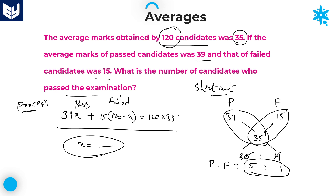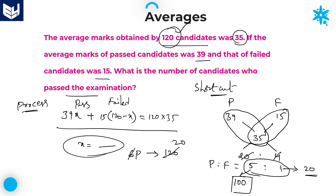The total parts for pass and fail together is 5 plus 1 equals 6 parts. Six parts equals 120 candidates, so each part equals 20 candidates. Failed candidates are 1 part, meaning 20 members. Passed candidates are 5 parts, meaning 5 into 20 equals 100 members. So 100 members passed and 20 members failed. The number of candidates who passed is 100 — that is the required answer.